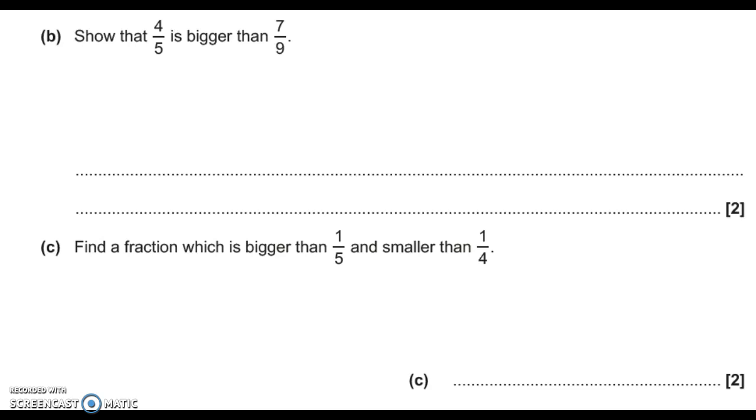We need to make our denominators the same. So in this instance we're going to make them both out of 45. That's because 45 is the lowest common multiple of 5 and 9.